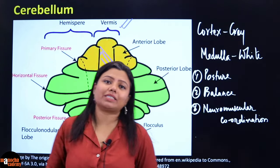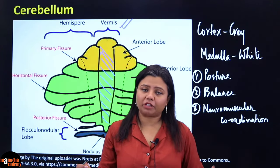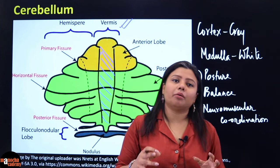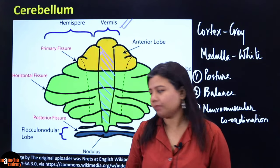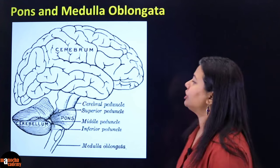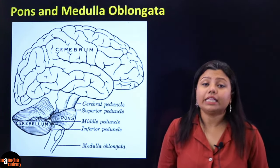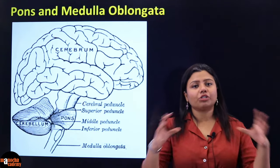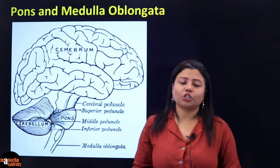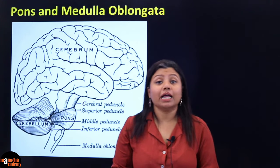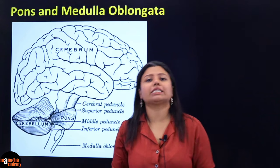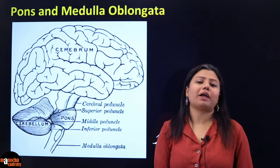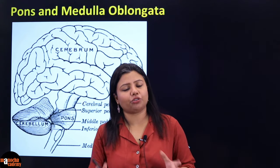Just to recap similarities between cerebellum and cerebrum: both have right and left hemispheres; both are connected by a central region — here it is the vermis, there it is the corpus callosum; both have sulci, gyri, etc.; and both have grey matter outside and white matter inside. Now the situation changes for the pons and medulla oblongata: in them, the position of grey matter and white matter is opposite — white matter is present outside and grey matter is present inside. For the spinal cord also, it is the same: white matter outside and grey matter inside.